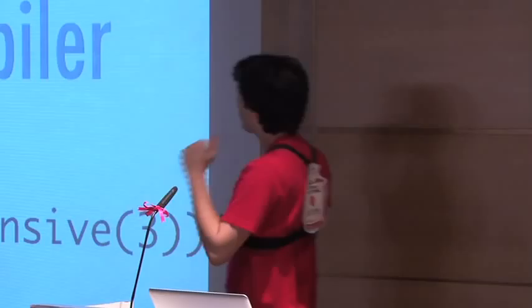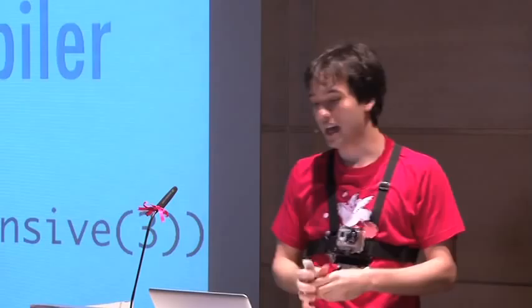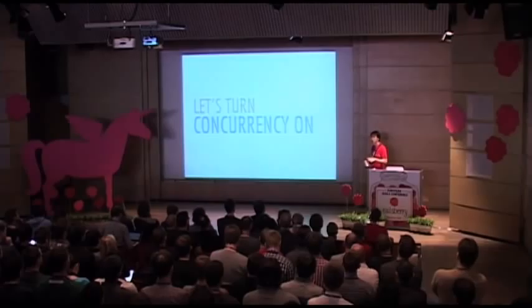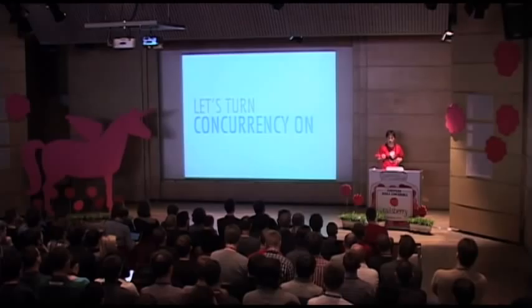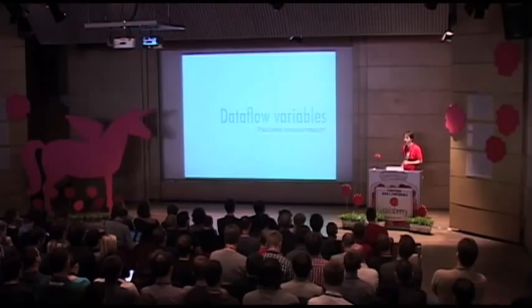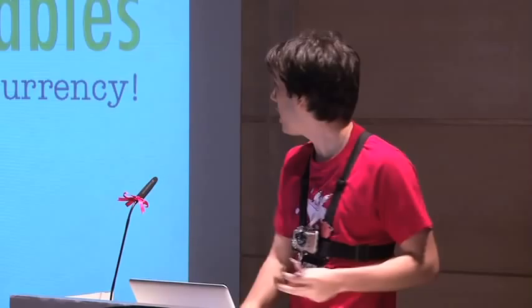That's the beautiful world where we don't have state or concurrency. Now we're going to take one step further and turn just concurrency on. This is the first concurrency paradigm we're going to talk about today. State is still off, but concurrency is on, and what we have is dataflow variables — painless concurrency.